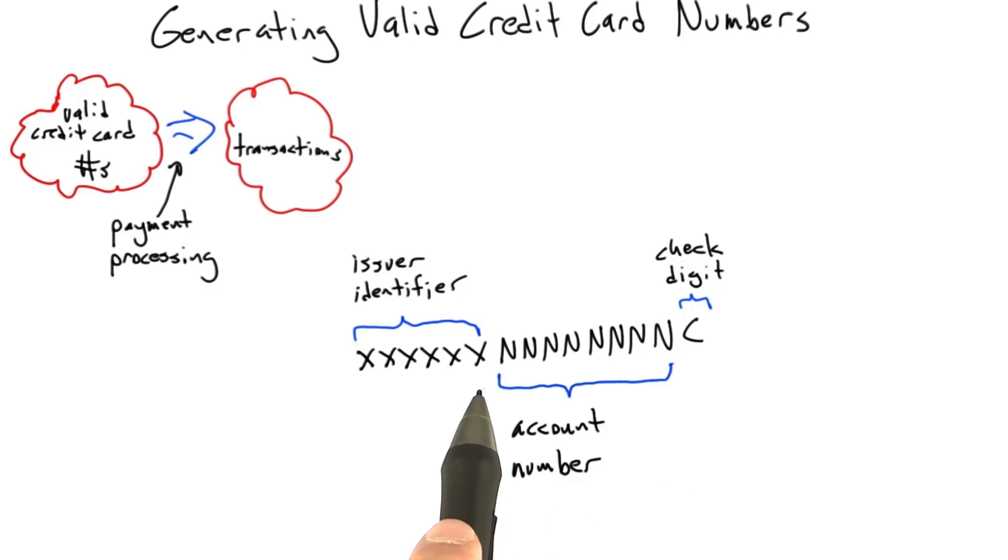And the credit card number can be rejected rapidly and algorithmically rather than actually having to submit this thing to somebody who can process the payments and forcing them to reject it when the account number or the issuer identifier fails to look up correctly.